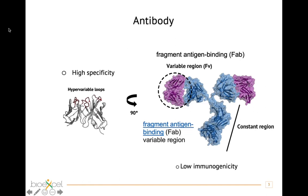Usually an antibody has a Y shape, or we can think of it as a protein formed of three arms. At the end of the arms we find the variable region, where we have the hypervariable loops. Those loops are the ones that contribute to the high specificity for the antigen. The other part — the fragment antigen binding region — is mainly constant and is not specific to different antibodies.